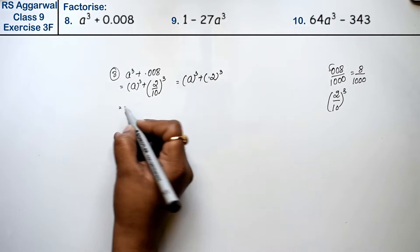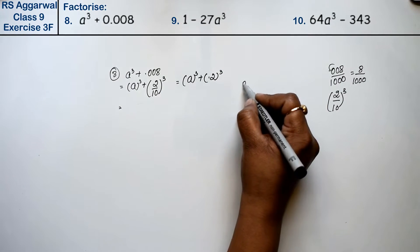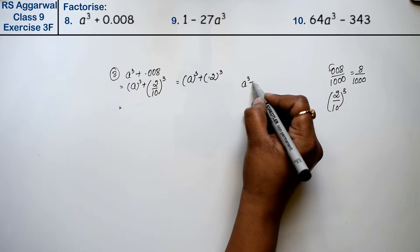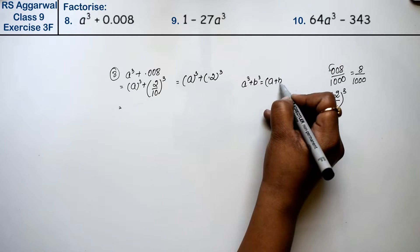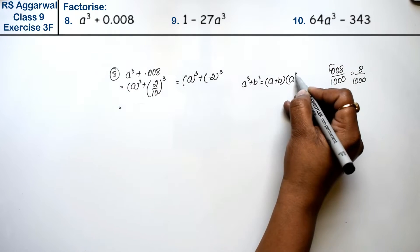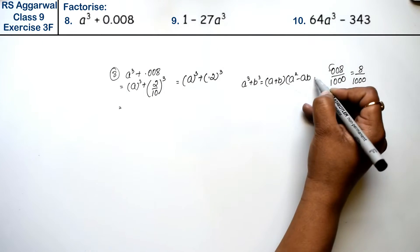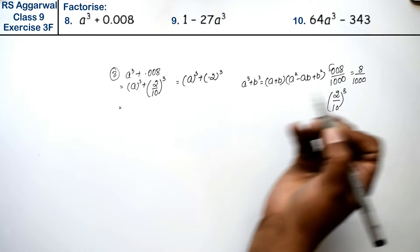We know the formula: a³ plus b³ equals (a plus b)(a² minus ab plus b²).